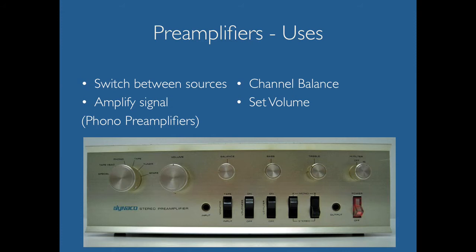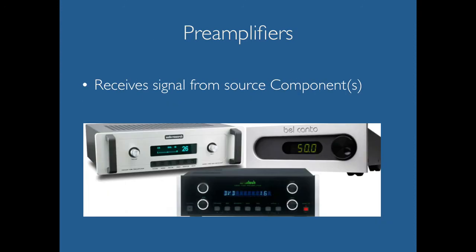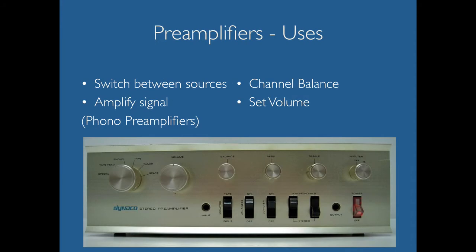A preamplifier can also deal with channel balance, and most importantly they usually have a big volume knob. Some of the most simplistic ones, like the Bel Canto here, seem to only have one knob — purely a volume control — whereas others have many additional features and options.